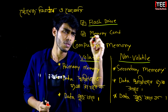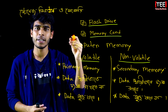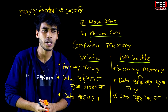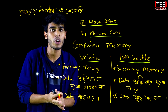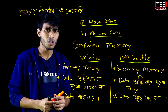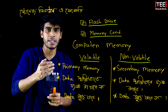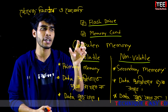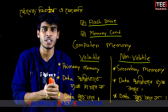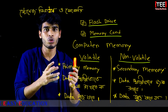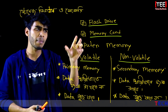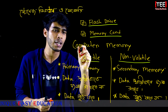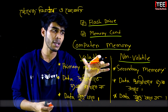Memory card — a storage device. Flash drive, same. Memory card — a microchip memory card. Memory card, which is used with the computer. This is the non-volatile memory.